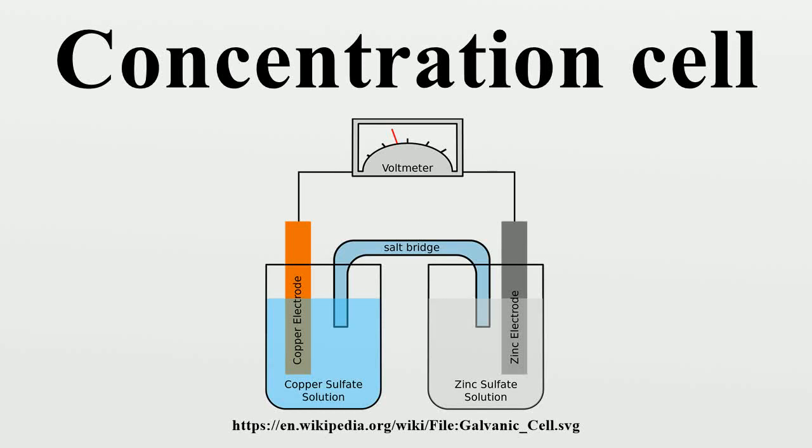A concentration cell is a limited form of a galvanic cell that has two equivalent half-cells of the same material differing only in concentrations.